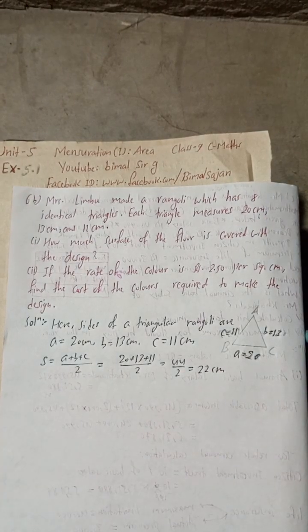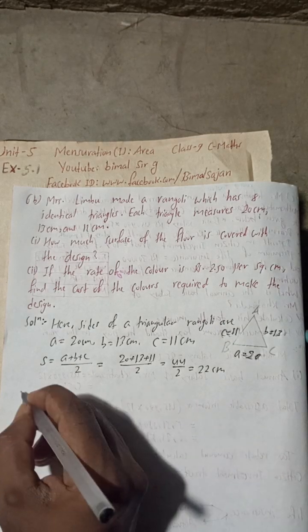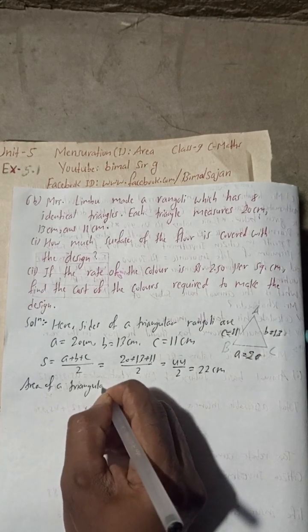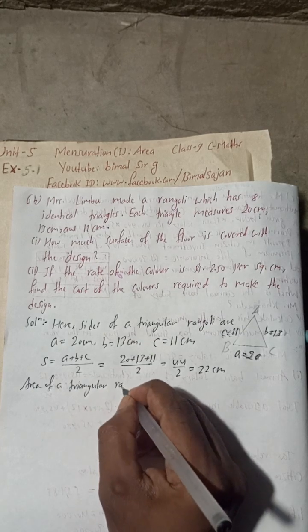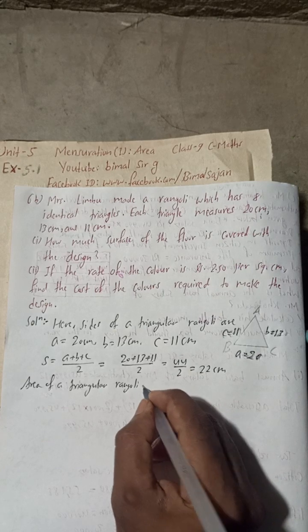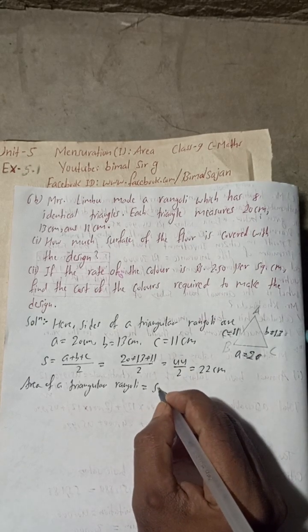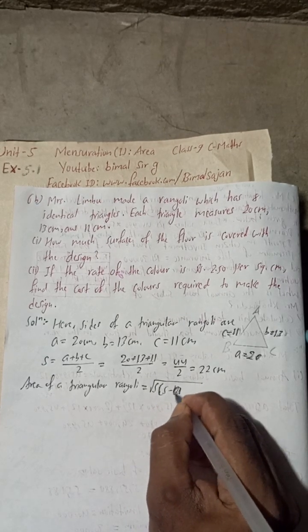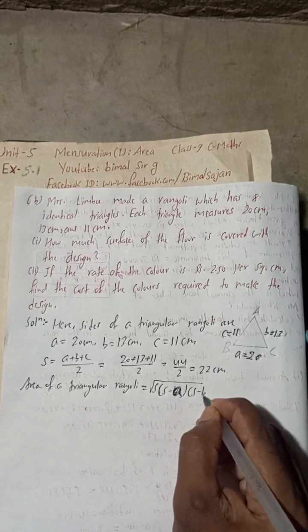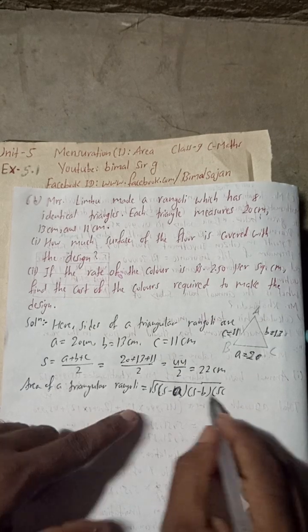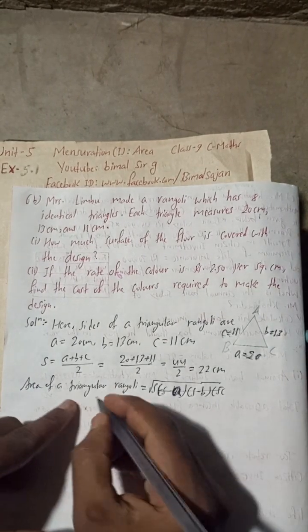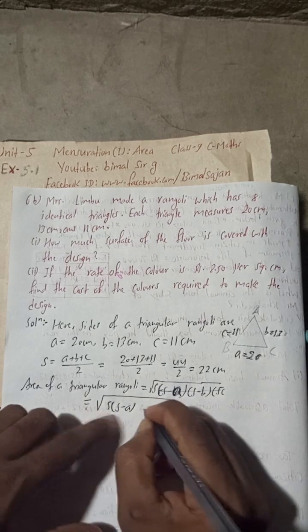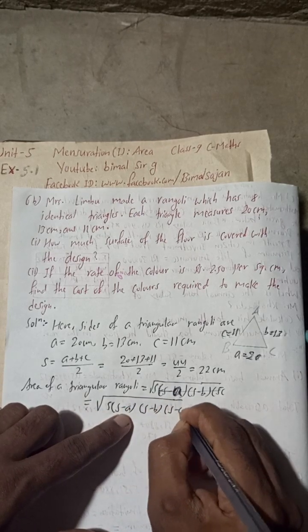Now, area of a triangular Rangoli. The formula of area is √[s(s-a)(s-b)(s-c)].